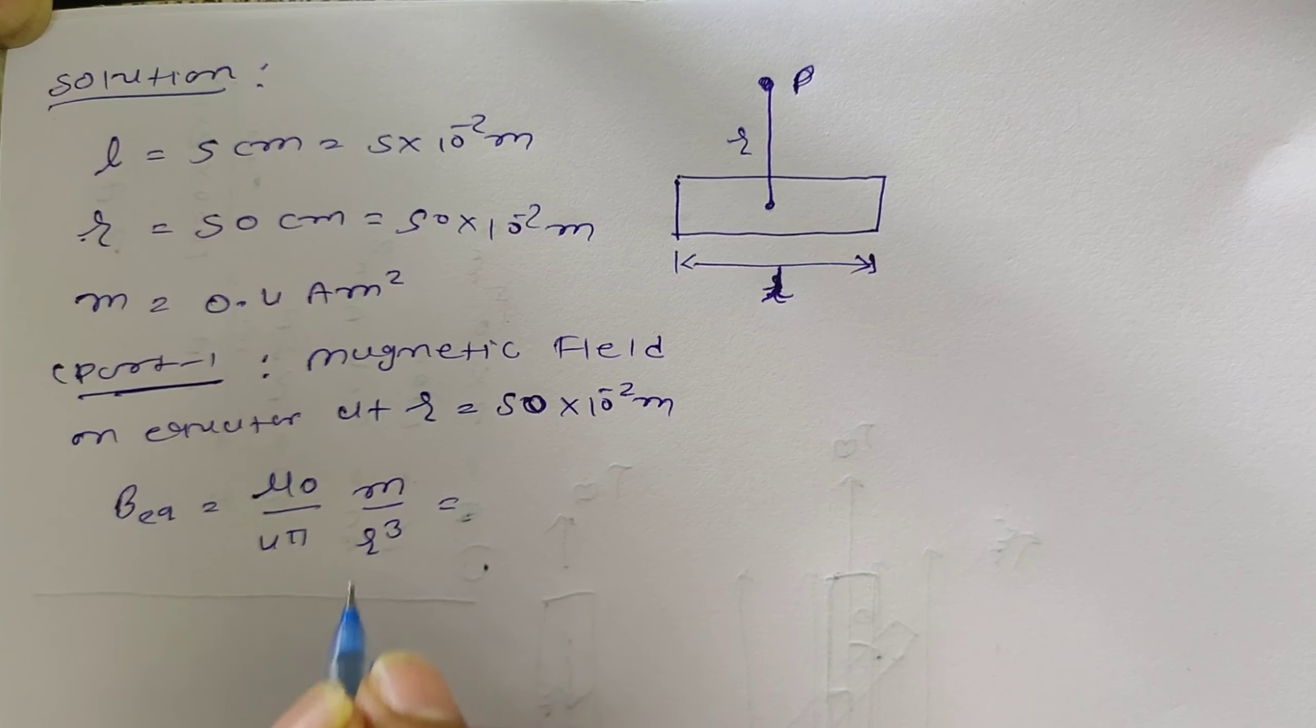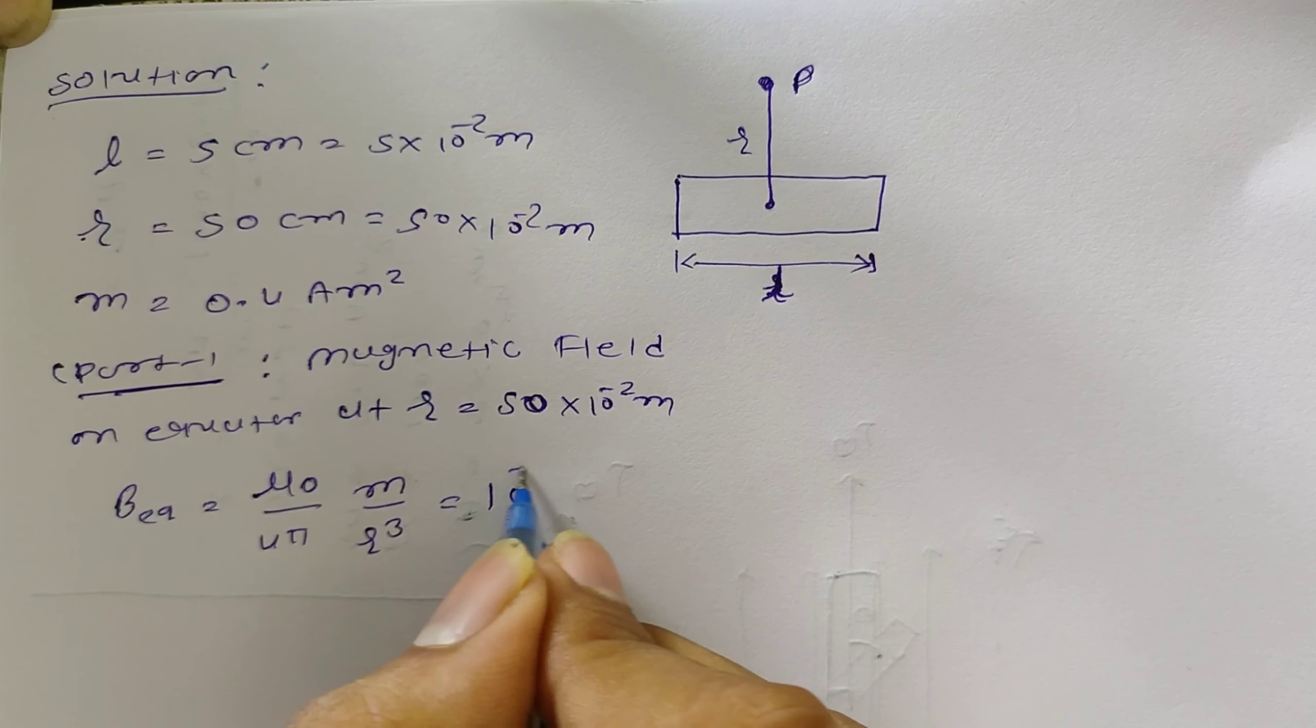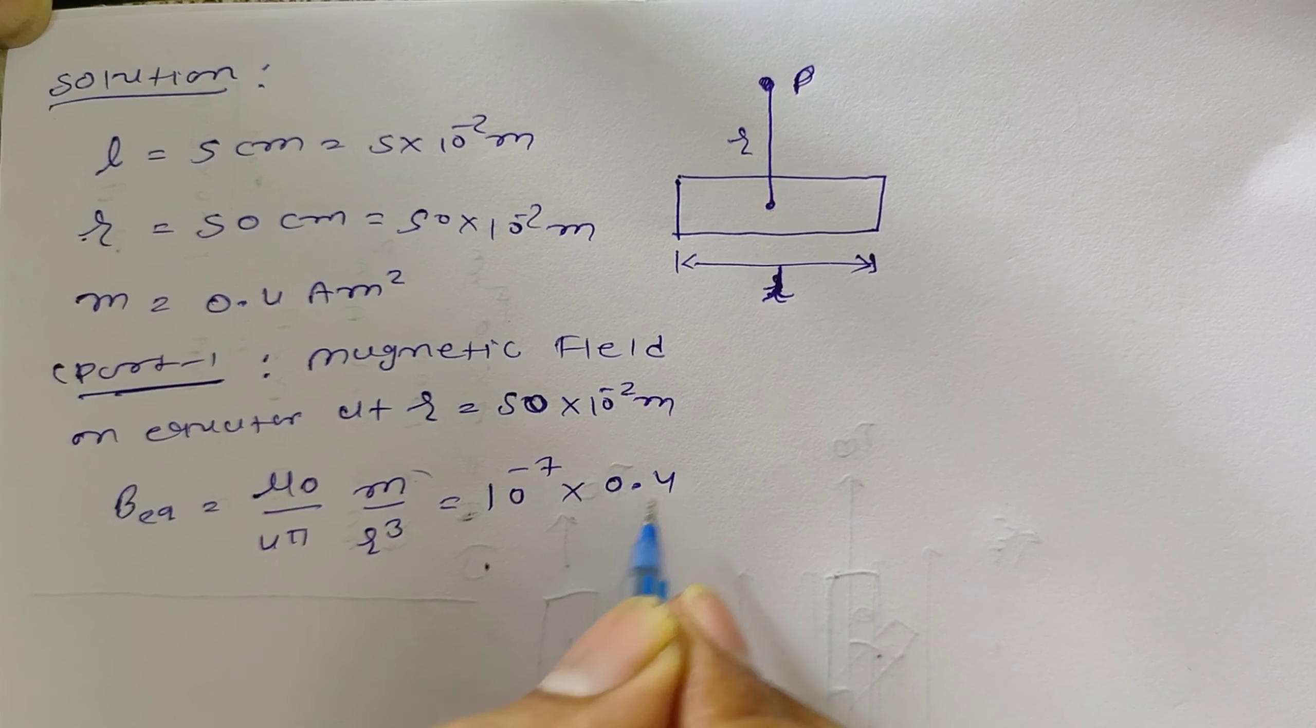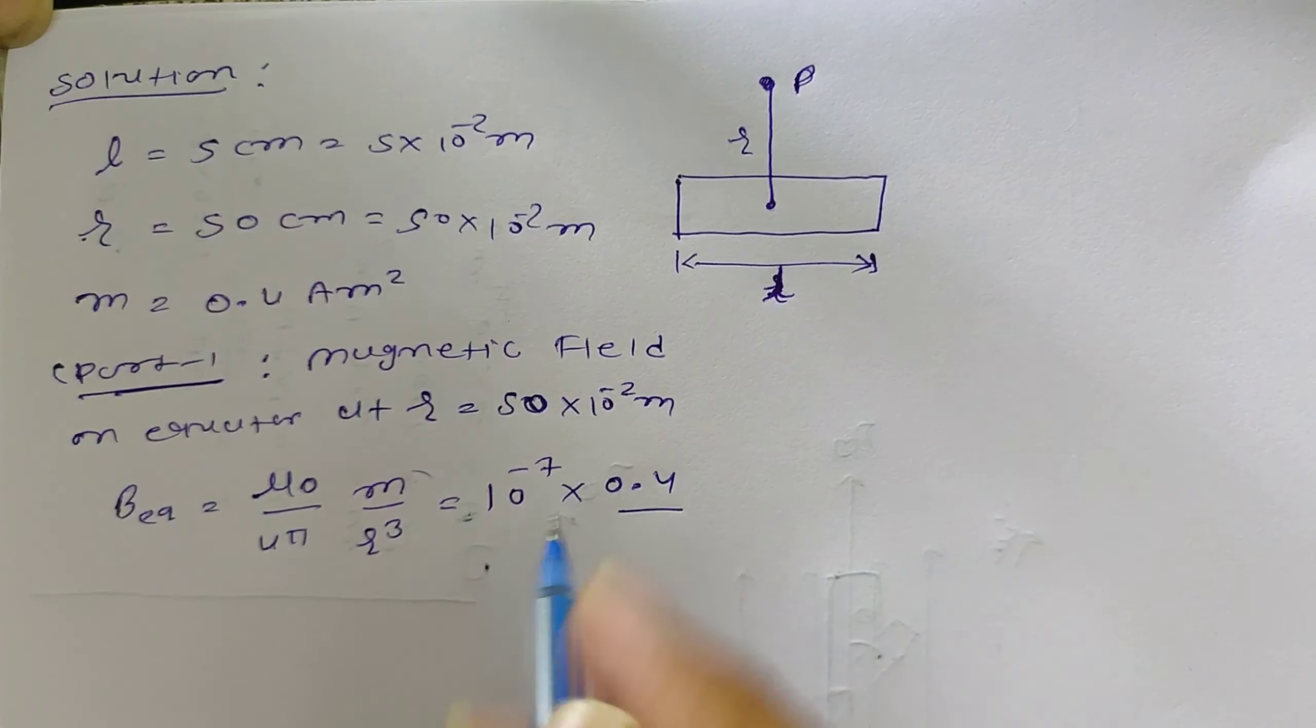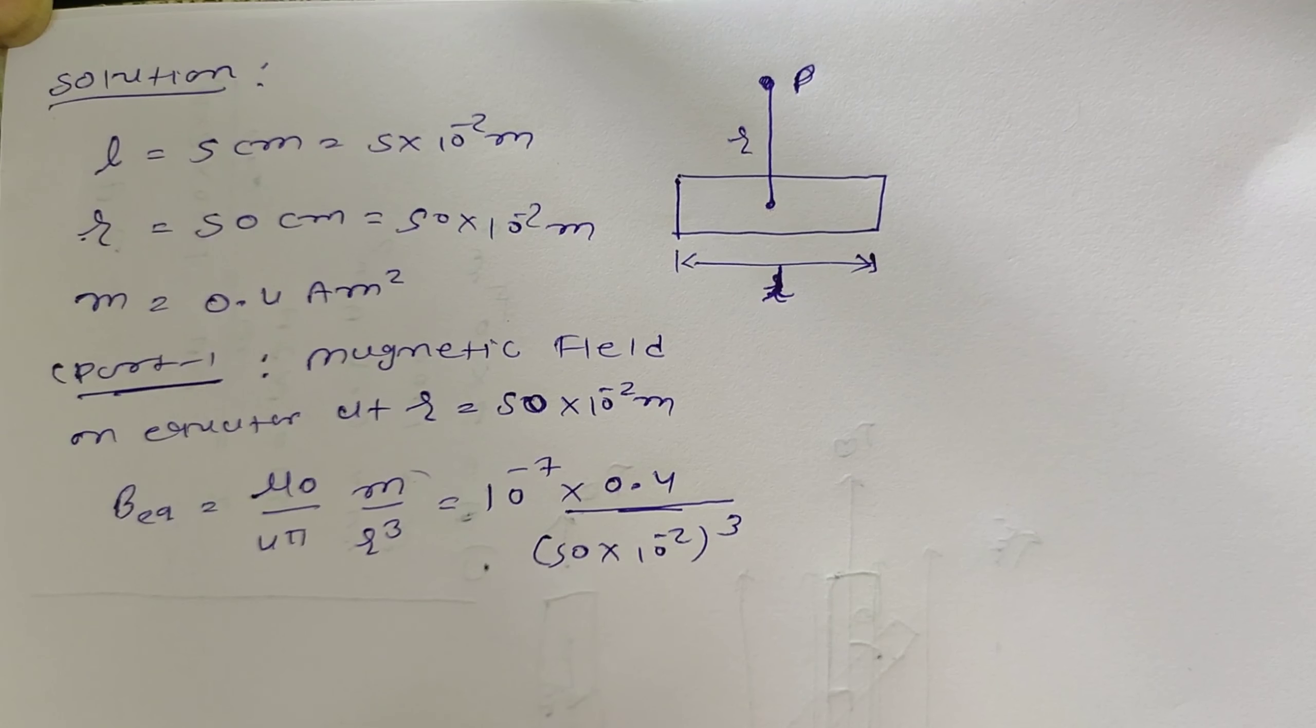Value of μ₀ is 4π×10⁻⁷, so 4π in denominator and numerator becomes cancelled out. So remaining term is 10⁻⁷. Magnetic moment M is 0.4, and 50×10⁻² raised to cube. After simplifying this term, you will get the answer 3.2×10⁻⁷ tesla.